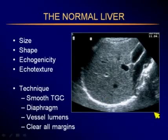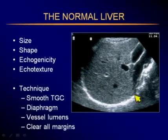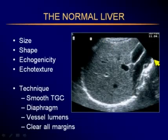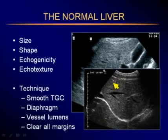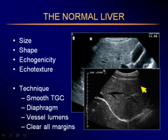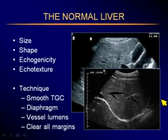The liver is very susceptible to technique. We have to make sure we have a nice smooth TGC curve and that penetration goes all the way back to the diaphragm — that curvilinear bright structure. We would like vessel lumens to be clear of extraneous echoes and to clear all margins of the liver. Here, we have very good technique on one side with nice echogenicity and clear vessels, but there's some dropout of sound on the other side that would need to be corrected by applying better pressure on the abdominal wall.